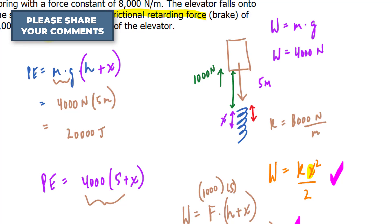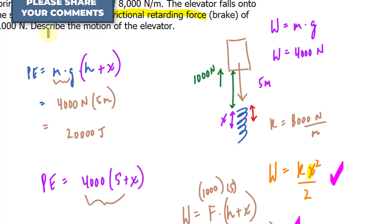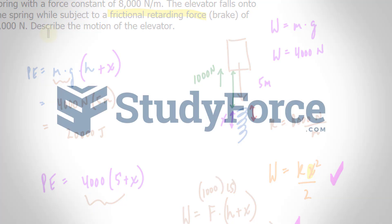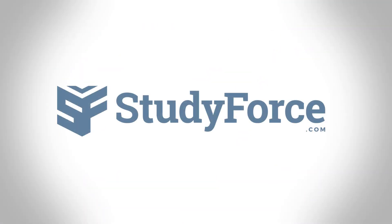The elevator will continue to bounce up and down off the spring until the weight of the elevator is equal to the force of the spring plus the frictional force. I can show you the calculation for that if you'd like. Just leave us a comment below and I'll gladly upload a video for that. Thank you for watching. If you have any further questions, you know where to reach us.